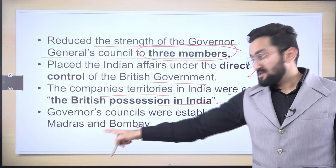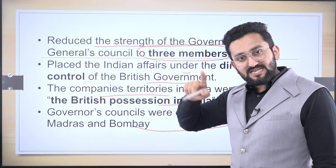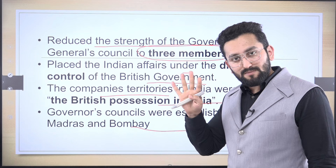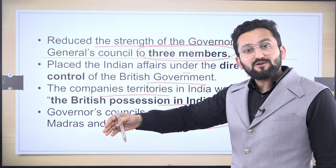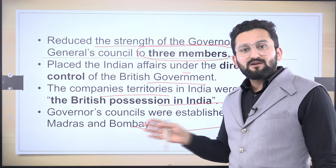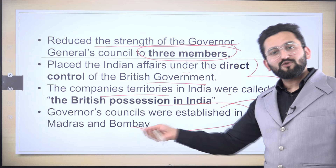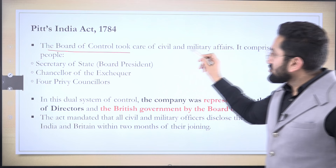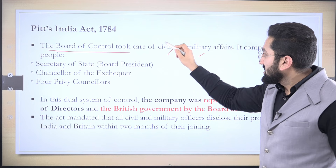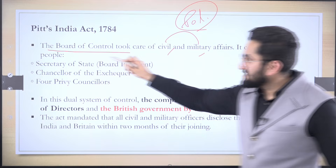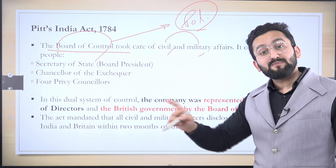Governor's Councils were established in Madras and Bombay — previously, after the 1773 Regulating Act, only the Governor General of Bengal had a four-member executive council, but Madras and Bombay governors were not given any supportive system. Now that was remedied. The Board of Control took care of civil and military affairs — these come under political affairs — while commercial affairs were taken care of by the Court of Directors. The Board of Control had six members: headed by the Secretary of State as Board President, Chancellor of the Exchequer taking care of revenue, and four Privy Councillors appointed by British administration.